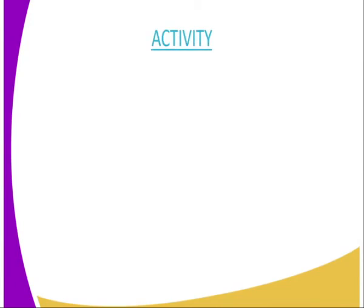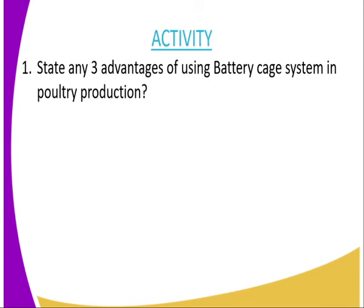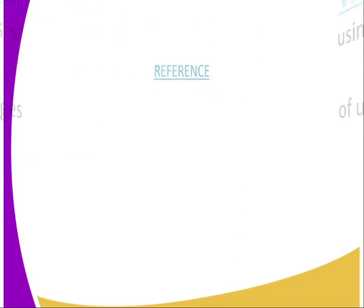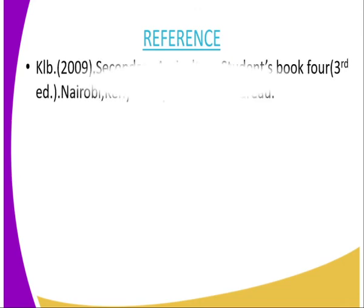We'll go to the activities of today. The first question as your assignment: state any three advantages of using battery cage system in poultry production. And number two, state any two disadvantages of using the battery cage system in poultry production. For reference, you can refer to the secondary agriculture student book four, published by the Kenya Literature Bureau.